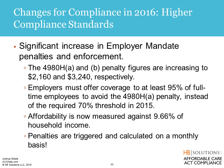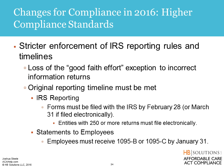Regarding affordability, it's 9.66% instead of 9.5%. The penalties are triggered and calculated on a monthly basis, not annually. With respect to reporting, the IRS has said they're going to have much stricter enforcement for both the actual rules and the timelines. The good faith effort exception is gone in 2016 — now it's not enough to make a good faith effort, you actually have to file correct returns and provide employees with correct returns. The original timeline must now be met: forms filed electronically with the IRS by March 31st or mailed by February 28th, and statements to employees by January 31st. We're not going to get the additional months of extension like we did last year.